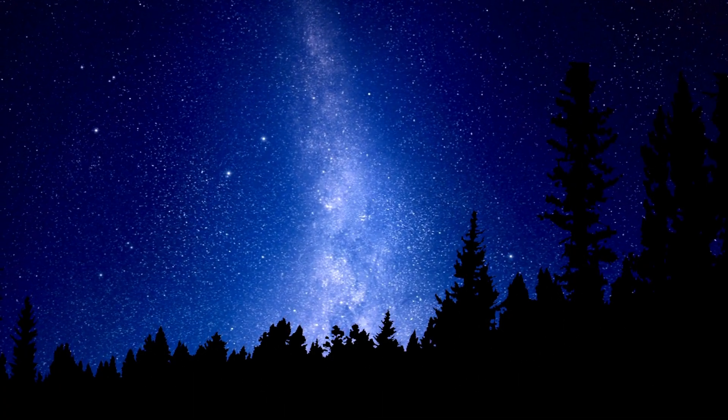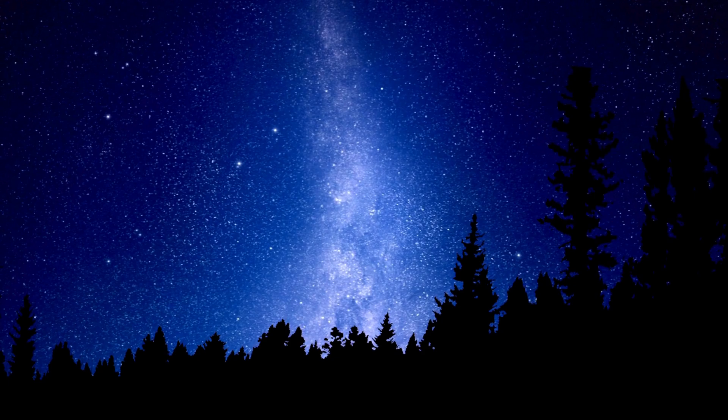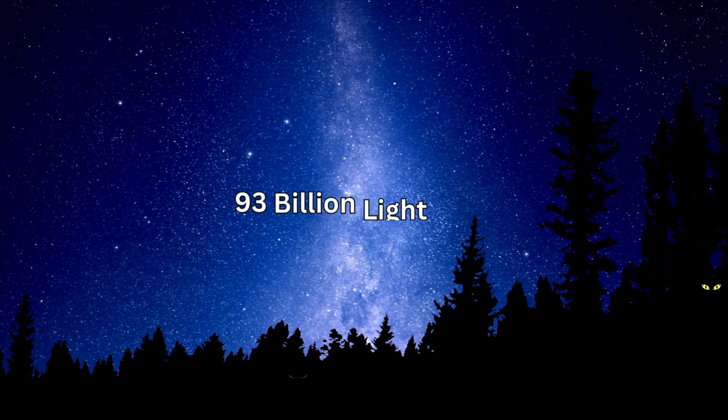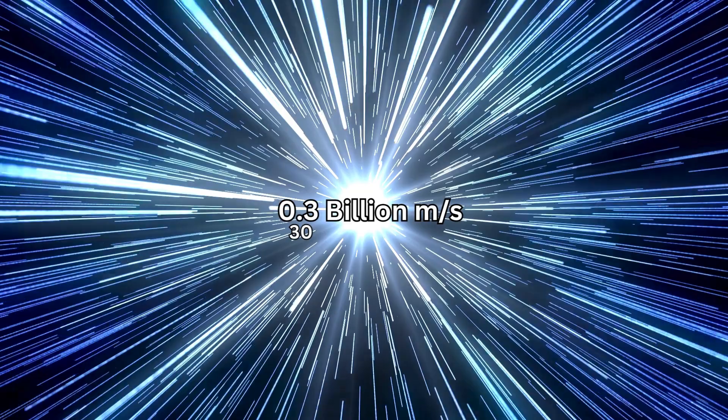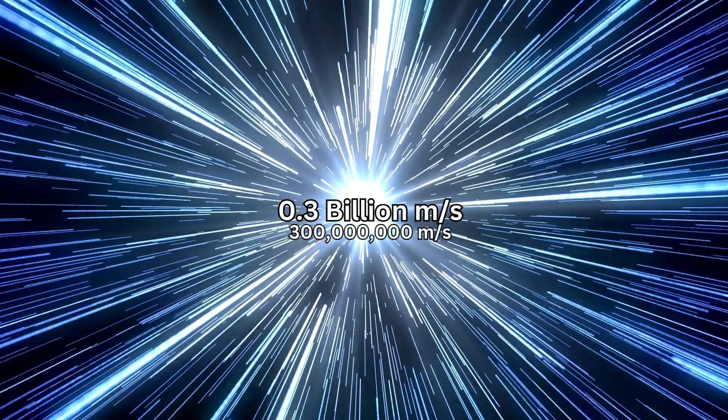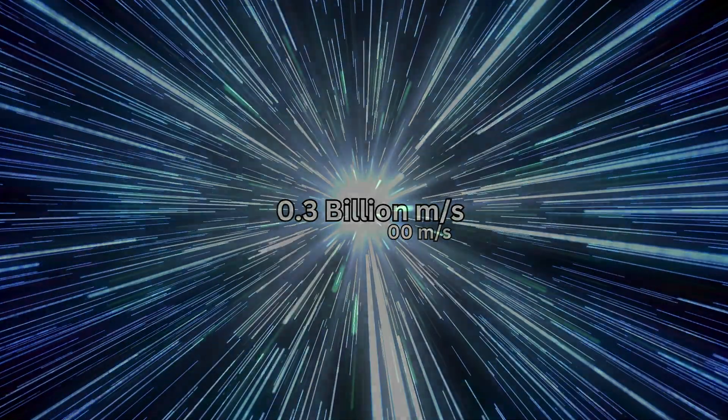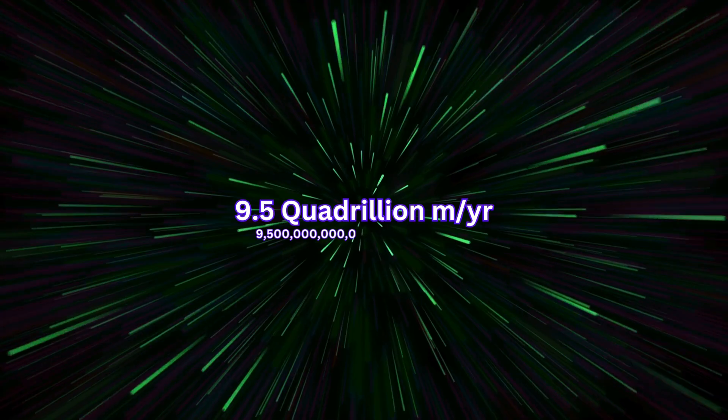From that, we got that the current observable universe is around 93 billion light-years. One light-year is the distance traveled by light in one year. Light travels at the speed of 0.3 billion meters per second in the vacuum of space. So light traveling for a year would be an astrophysical number, which is around 9.5 quadrillion meters per year.